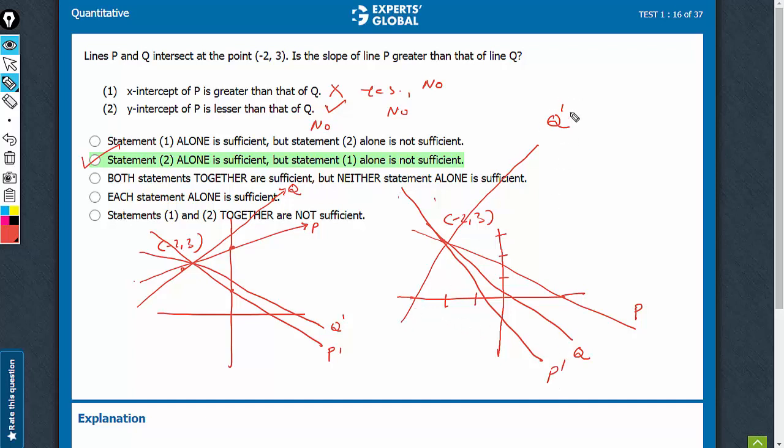So it is satisfying the condition that x-intercept is greater for p than for q. This condition is being satisfied. See, this x-intercept is lower, the x-intercept here is higher. But in this case, the slope is more here - rising line, falling line. In this case, this was a less negative slope. So in this case we got yes, in this case we got no. Both conditions are possible.